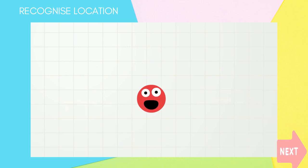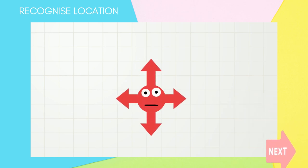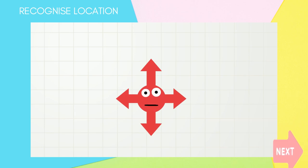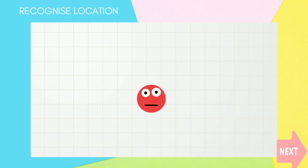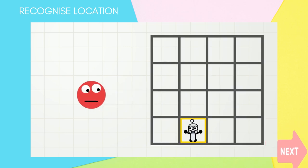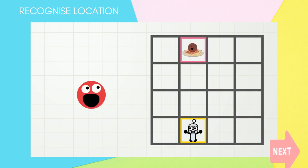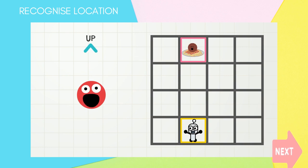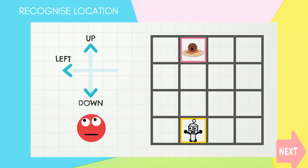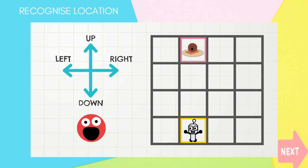Now let's play a game about location and directions! Directions are ways to go. And when we give directions, we tell someone with our voice which way to go. We need something to give directions to — how about Tiny Robot? Tiny Robot will start here on this map of squares, and Tiny Robot is hungry! Luckily, there is a plate of spaghetti here!